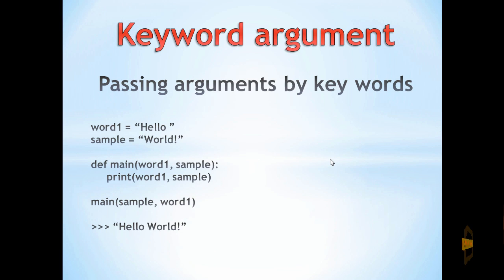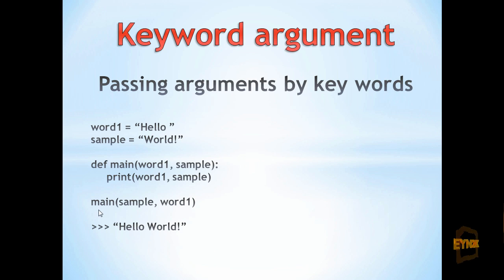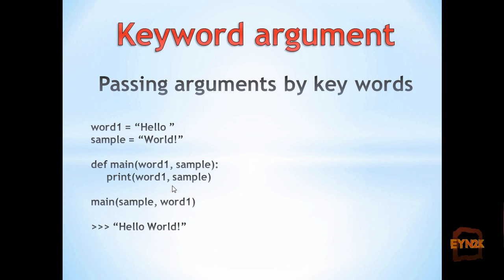In this example we are passing arguments by keyword, such that we have word1 equal to hello and sample equal to world. When we pass sample and word1 to the function, we are naming them appropriately inside the parentheses. So the variable sample will be passed to the variable sample inside the parentheses, printing off hello world rather than by correct position. So sample will be passed to the second position and word1 to the first position, because they are appropriately named.